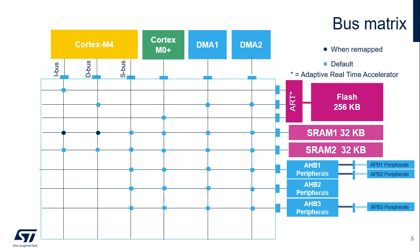SRAM2 is accessible through the IBUS and D-BUS, allowing zero wait state code execution, and through the S-BUS. The AHB1, AHB2, and AHB3 peripherals are also accessible through the S-BUS. The Cortex-M0+ also reads the flash memory through the Adaptive Real-Time Accelerator, or ART, and has access to the SRAM1 and SRAM2 memories, and the AHB1, AHB2, and AHB shared peripherals. The two DMAs can access all memories and peripherals. Different bus masters are able to access different memories and peripherals simultaneously via the bus matrix, enabling high-performance computing operations. Simultaneous master accesses to the same bus are handled via round-robin arbitration.